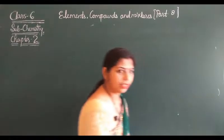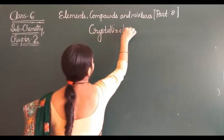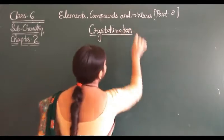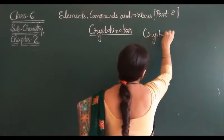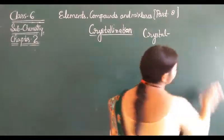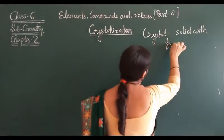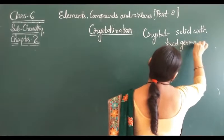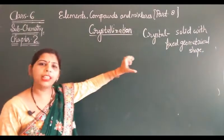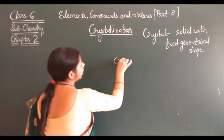The next process is crystallization. What is crystallization? First, what is a crystal? Crystals are solids with a fixed geometrical shape. This crystallization process also resembles evaporation — it is known as controlled evaporation.